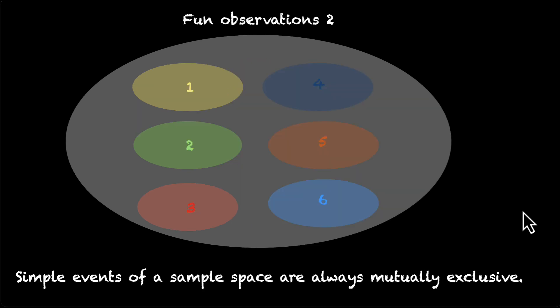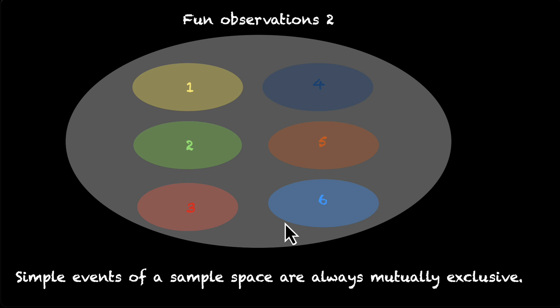Another observation: simple events are events which have only one sample point, and all simple events are mutually exclusive to each other. So if you roll a die and you have these six events — getting a 1, 2, 3, 4, 5, or 6 — all six of them are mutually exclusive to each other. If you get a 2, you can never get anything else; if you get a 6, you can never get anything else, and so on.